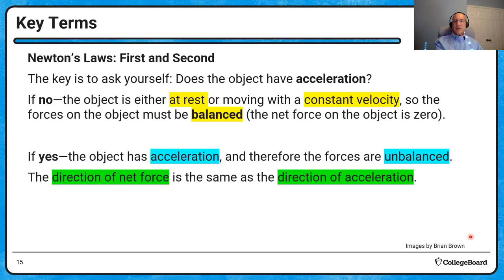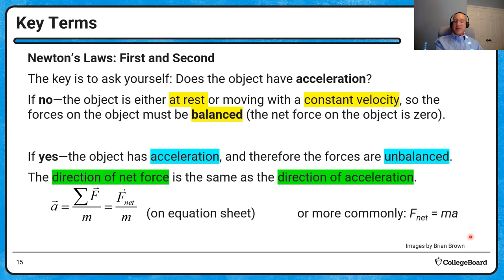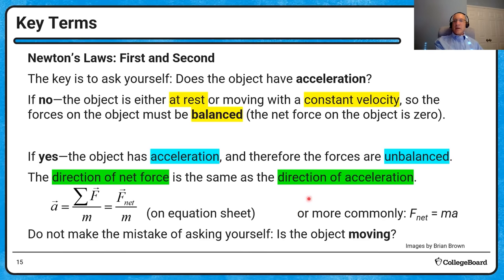The most famous equation in physics is F equals ma. On the equation sheet, acceleration is defined as the net force divided by the mass. The law of inertia — Newton's first law — states that objects at rest stay at rest and objects in motion stay in motion, but only when the net force is equal to zero and forces are balanced.